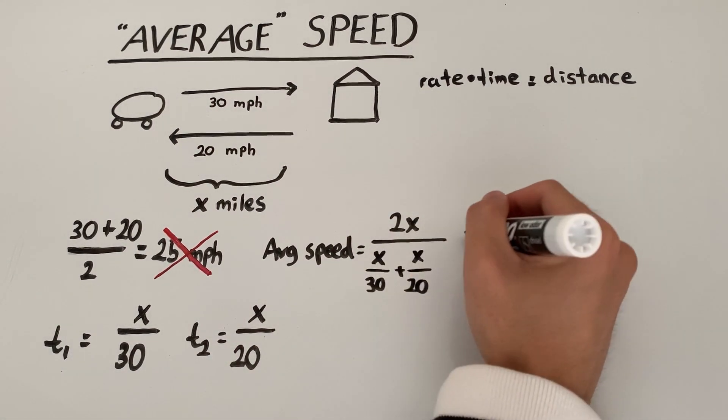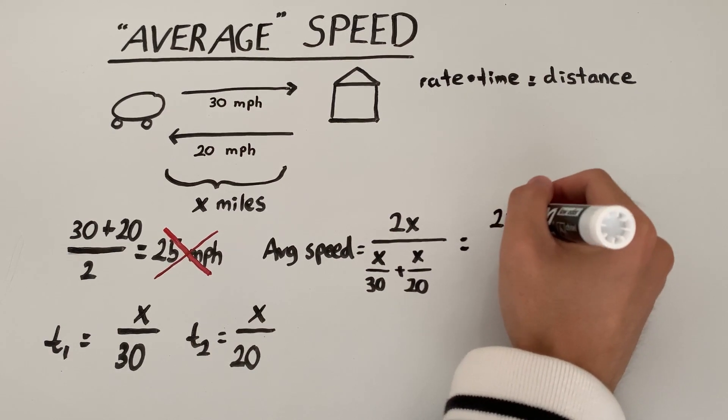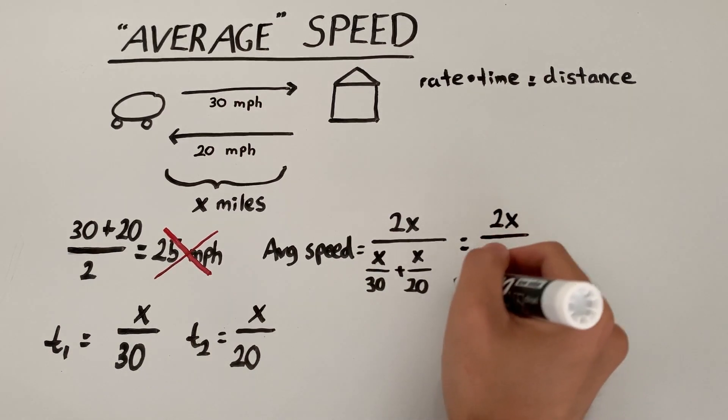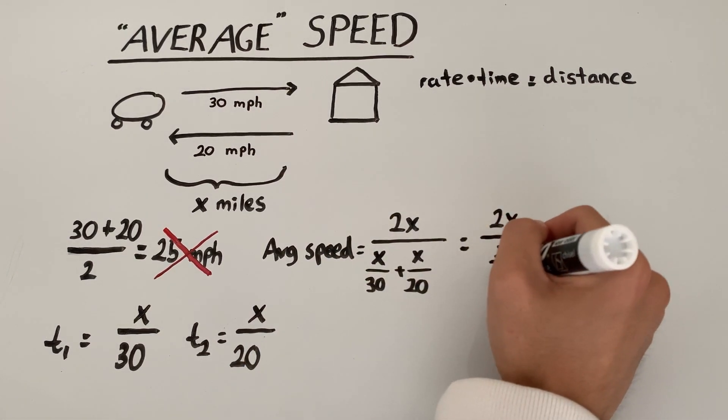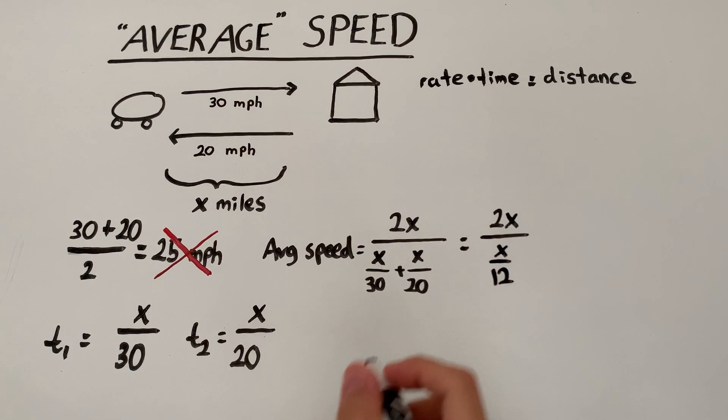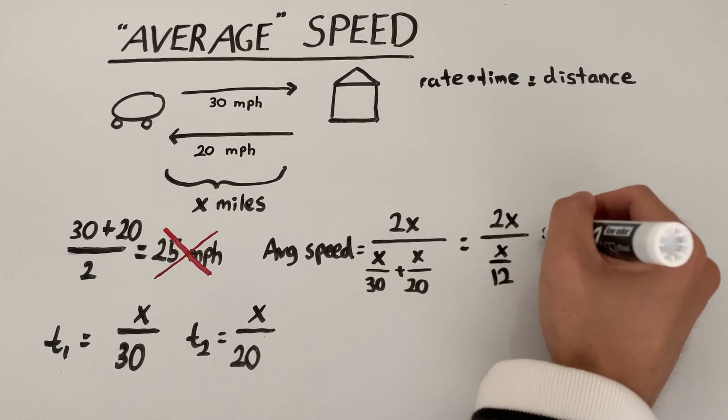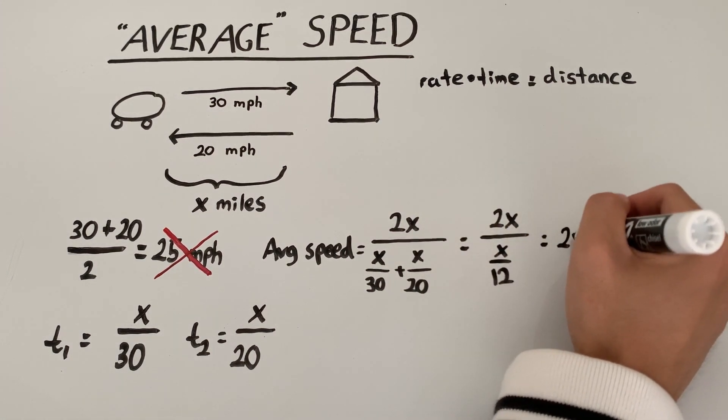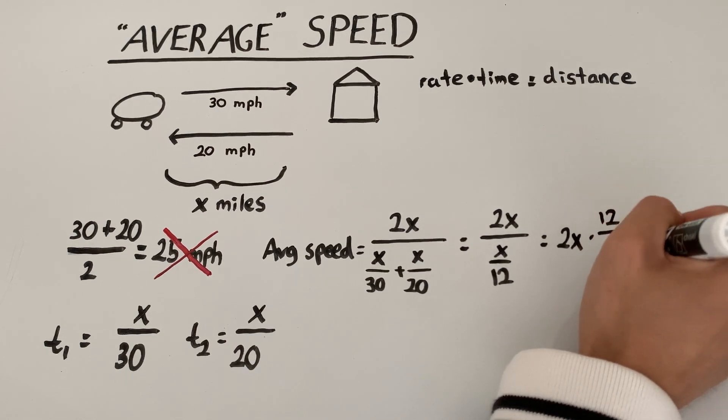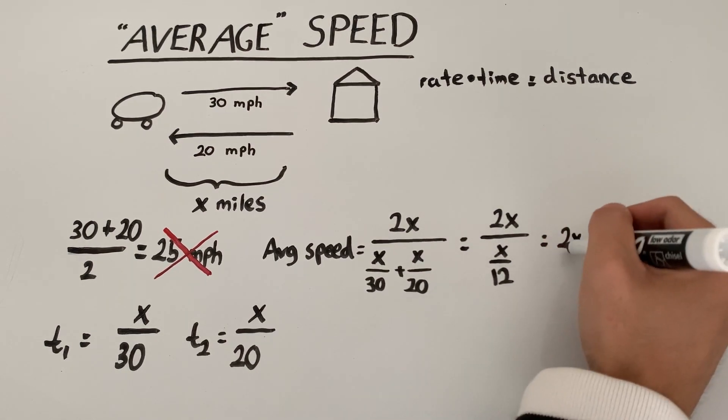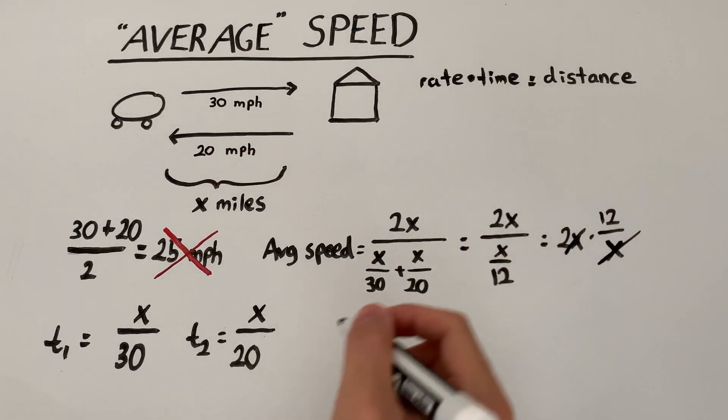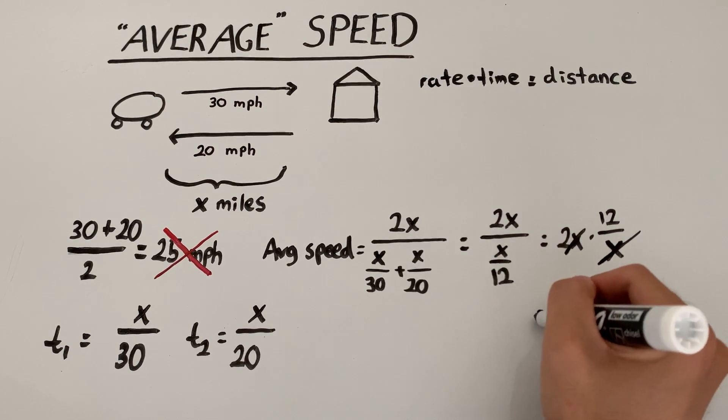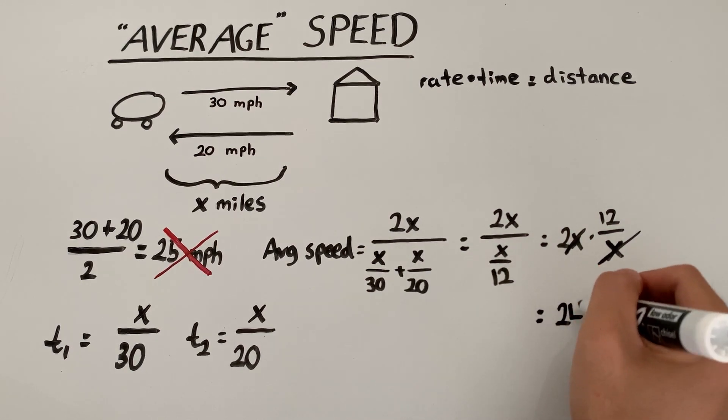And this can be simplified to 2x over x over 12, which is the same as 2x times the reciprocal 12 over x and we see that the x's cancel out and we're left with a final answer of 24 miles per hour, not 25.